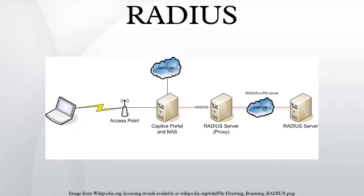Additionally, the request may contain other information which the RAS knows about the user, such as its network address or phone number, and information regarding the user's physical point of attachment to the network. The RADIUS server checks that the information is correct using authentication schemes such as PAP, CHAP, or EAP.